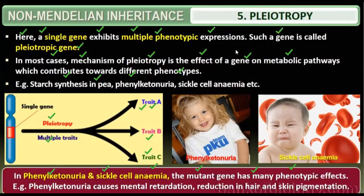Examples include starch synthesis in pea plants, phenylketonuria, and sickle cell anemia. In phenylketonuria, only one gene causes mental retardation, reduction in hair pigmentation, and reduction in skin pigmentation. The same single gene is responsible for all these different effects — this is the concept of pleiotropy.